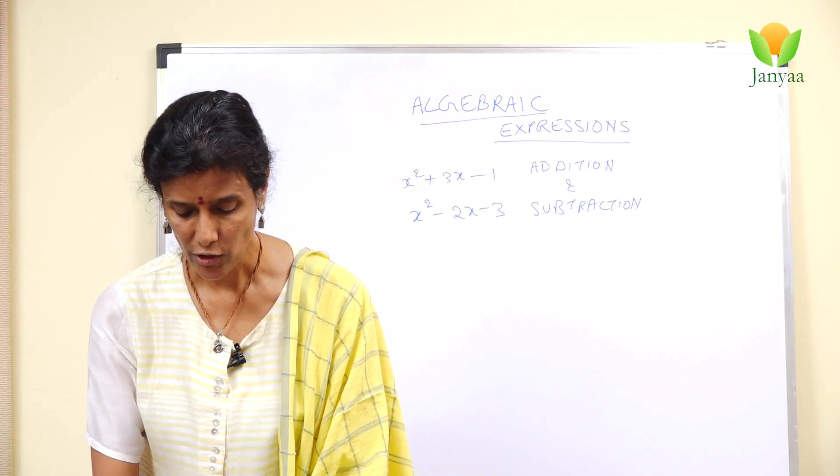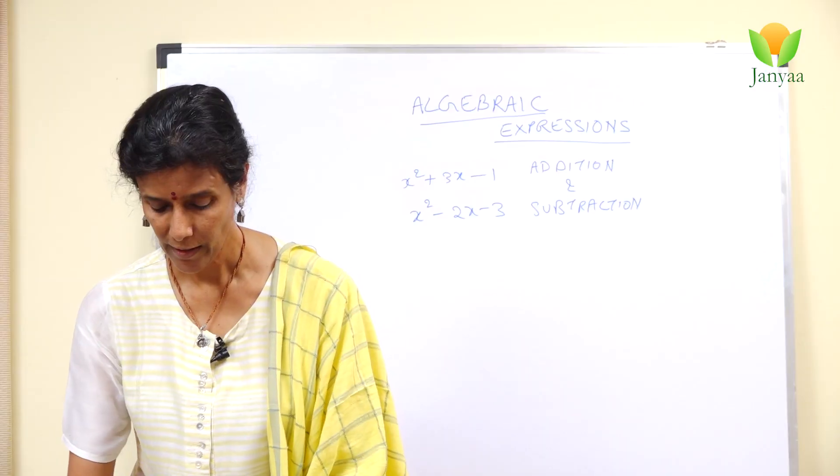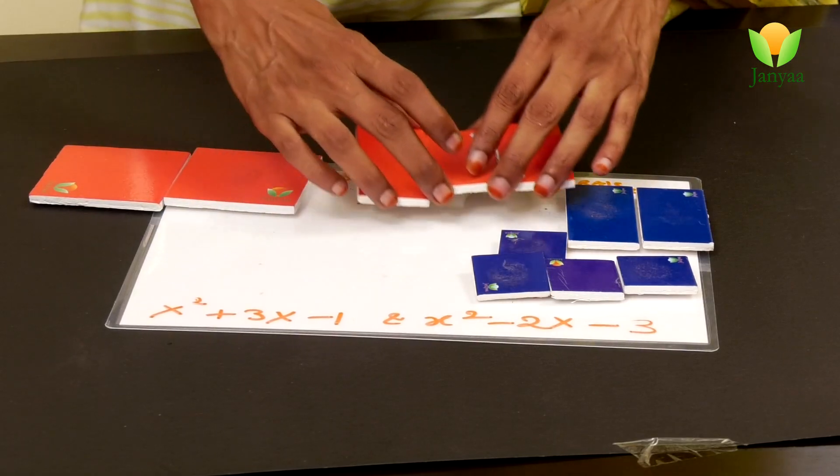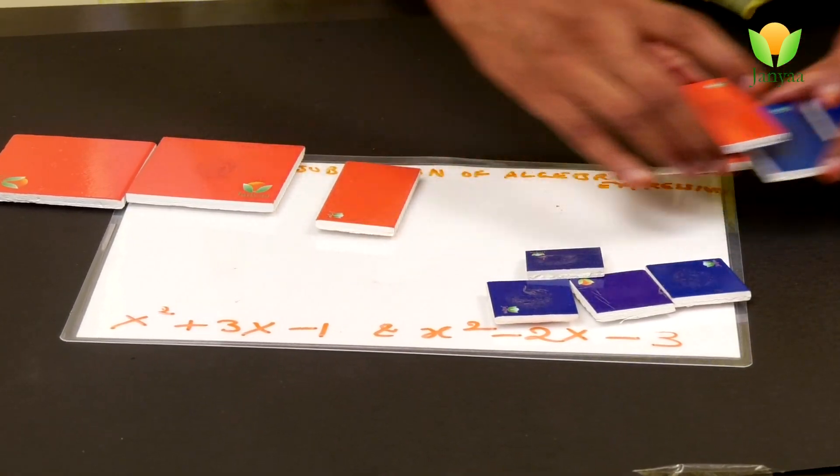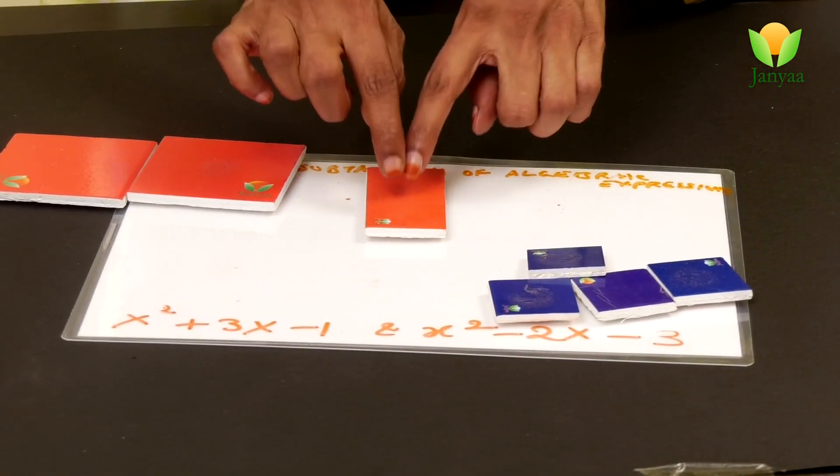Which is minus 4. And now how do you add these? See, these two negate each other, correct? Let's take this out. So you are only left with 1x.